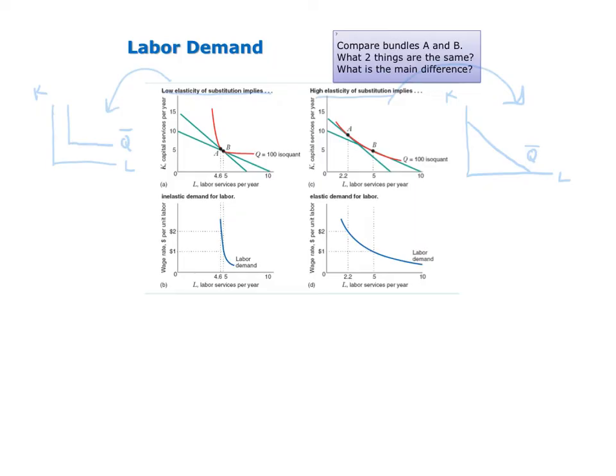The elasticity of substitution is what is driving the difference in the two labor demand curves. For the graph on the left, we see that when the wage rate rises, the firm doesn't move a lot towards the labor and out of the capital because it can't. The two inputs aren't highly substitutable, so the firm's kind of stuck. It's not going to be able to replace workers with capital as easily, and so you just don't see a big response in the quantity of labor demanded to the change in the price of labor.